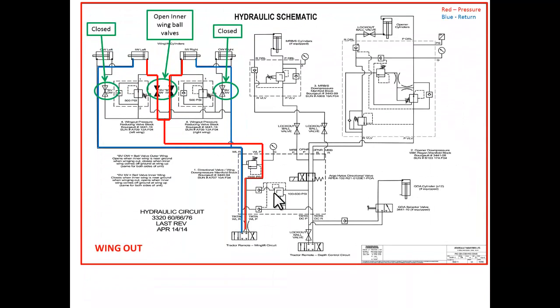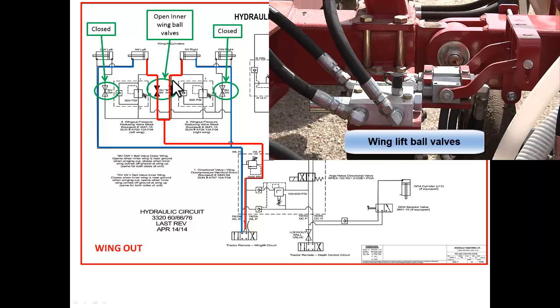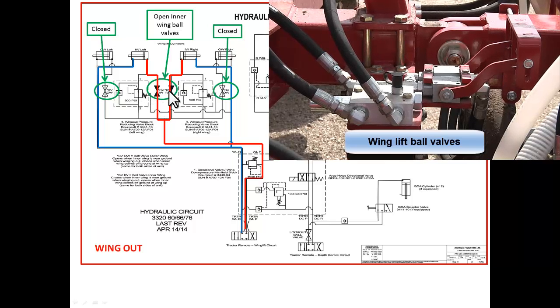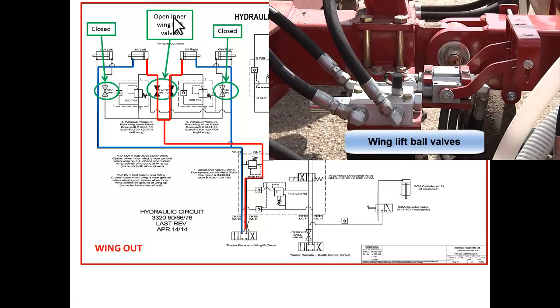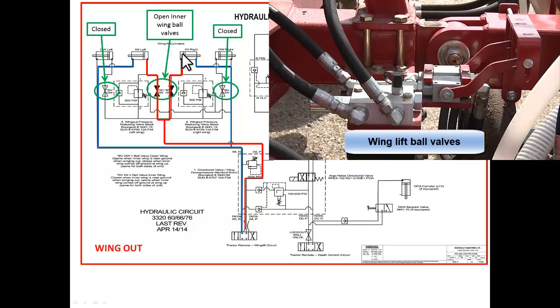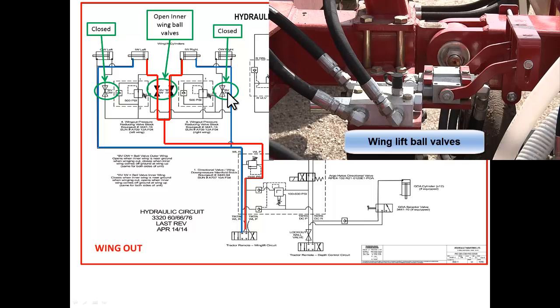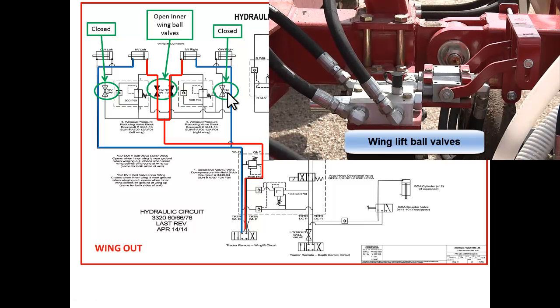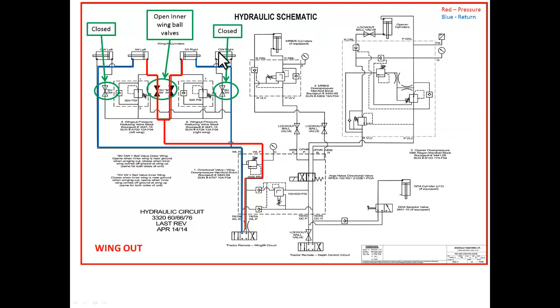The above image shows the start of the wing out process. The inner wing ball valves are open giving full pressure to the base end of the wing lift cylinders. At the same time the ball valves to the outer wings are closed. That forces the oil to the inner wings first and no oil going to the outer wings, keeping the sequence in the proper order.